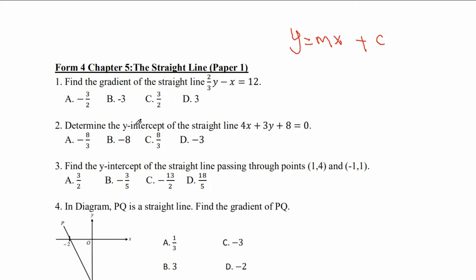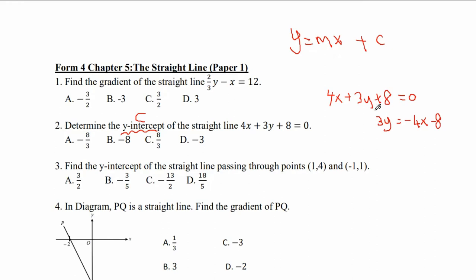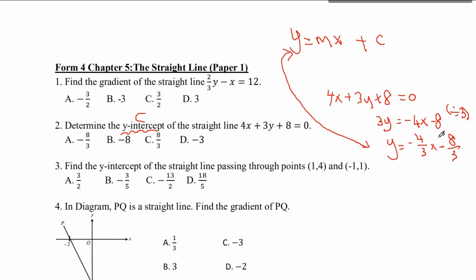Number 2: determine the y-intercept of the straight line 4x plus 3y plus 8 equals to 0. We are going to find the value of c. We rearrange: 3y equals to negative 4x minus 8. The coefficient of y must be 1, so we divide by 3. y equals to negative 4 over 3 x minus 8 over 3. Comparing to y equals mx plus c, c equals negative 8 over 3. So the y-intercept is negative 8 over 3. The answer is A.